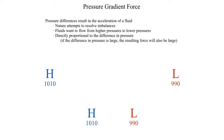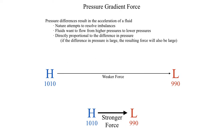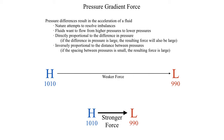Another thing worth examining is what happens if the pressure centers are spread farther apart. In the top row there is an area of high pressure and low pressure that are much farther apart than in the bottom section. Intuitively, we expect the pressure gradient force to be much stronger if the pressure differences are much closer together, and that is in fact what we typically observe in the atmosphere. The force is partially dictated by the distance between the two pressures, so since the high and low in the bottom are really close together, we expect that force to be stronger. The pressure gradient force is in fact inversely proportional to the distance between a high pressure and a low pressure.